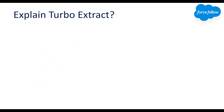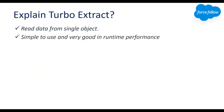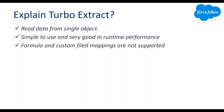Now let's talk about Turbo Extract. If you want to read data from a single object, we should use Turbo Extract Data Raptor because it is simple and very good in runtime performance as well. However, we can't use formulas and custom field mapping here. Custom field mapping means we can set field aliasing or output JSON structure, but that is not possible in Turbo Extract. Let me open my org and give you a quick refresh.